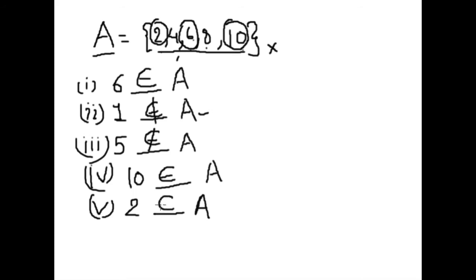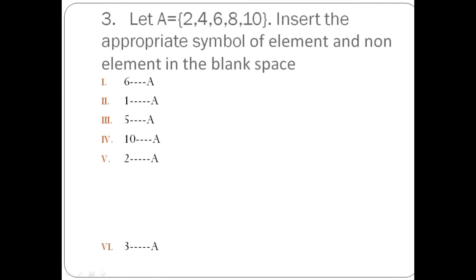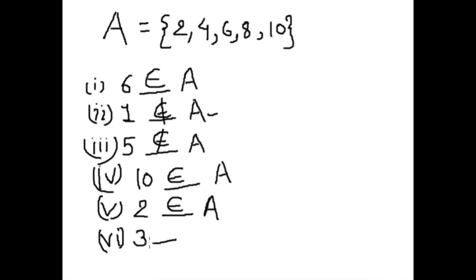say 2 is an element of A. Let's go to next question: 3 blank space A. 3 blank space A. So can we see here? It's 2, 4, no 3. 3 is not available in this set,